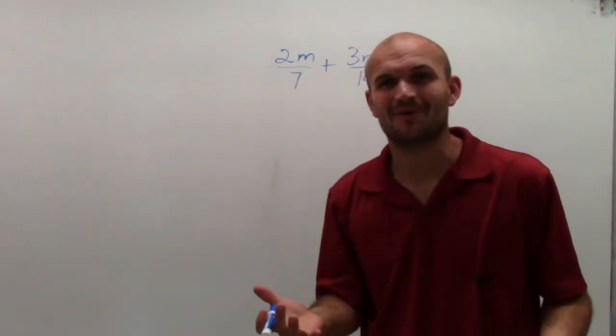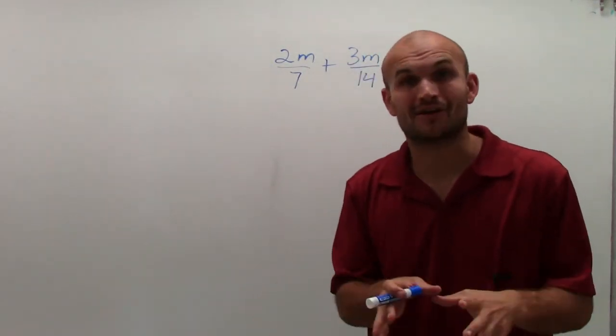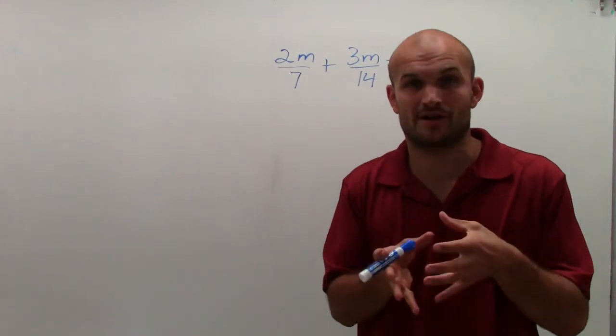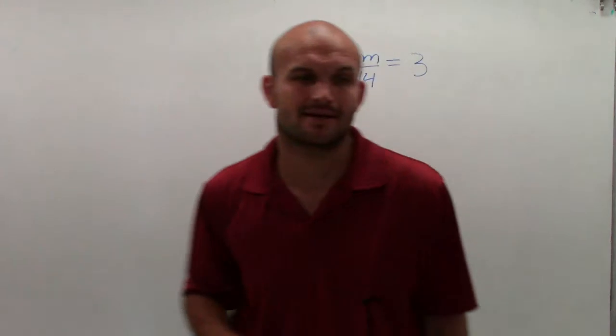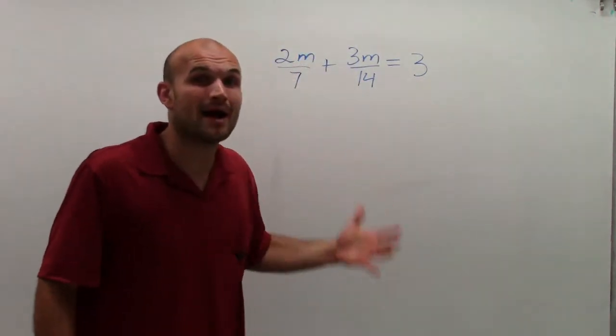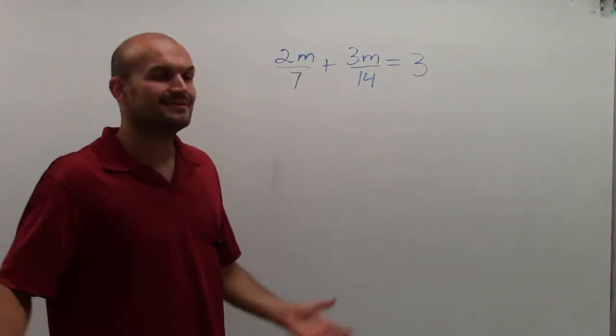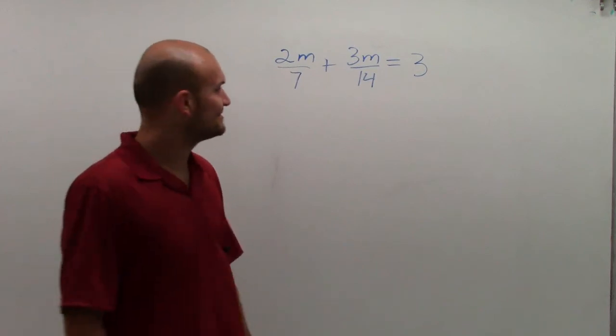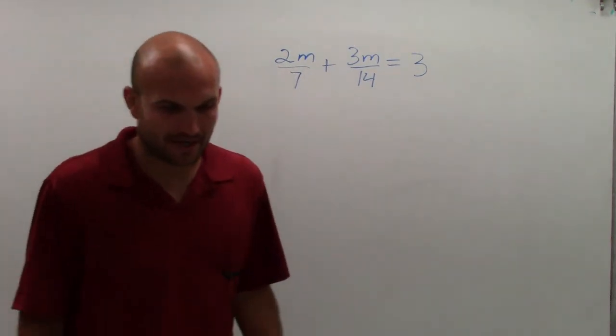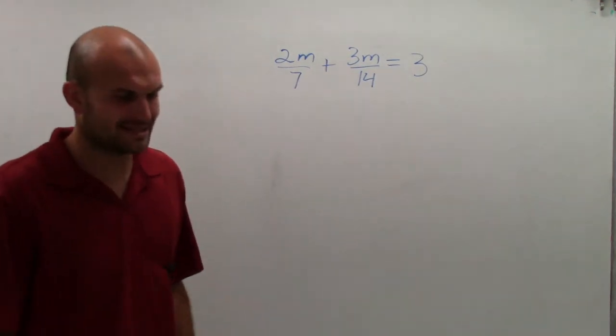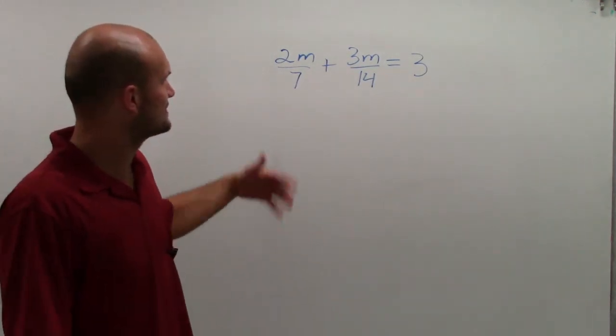What we've done before is combined our like terms, or combined our variables, so we'd have one single variable that we could solve for. We could isolate. And this one becomes a big problem because of stupid fractions. So there's a couple ways we can get rid of fractions and to help you out with it.